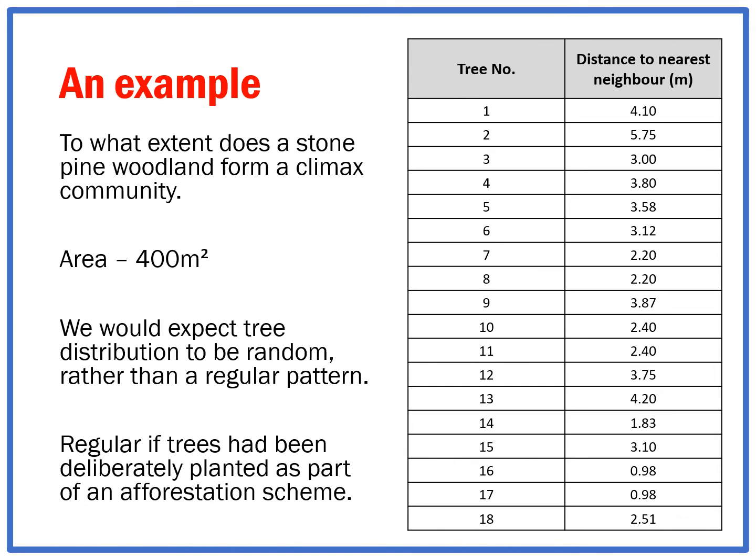The area is 400 meters squared. We would expect, because it's nature, there to be a random pattern rather than a regular pattern. If it was regular, it kind of implies that humans have deliberately planted trees as part of an afforestation scheme.